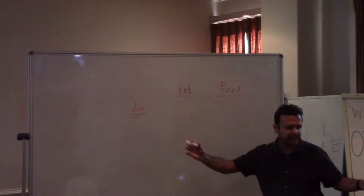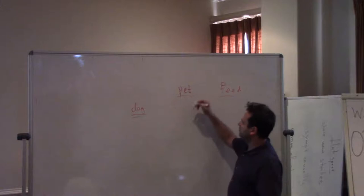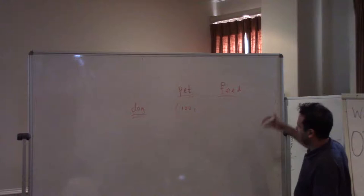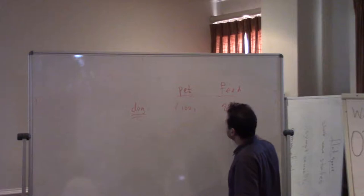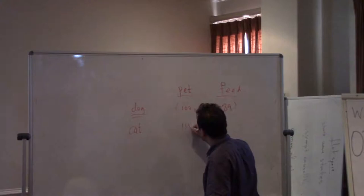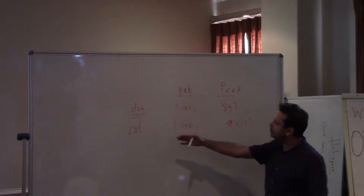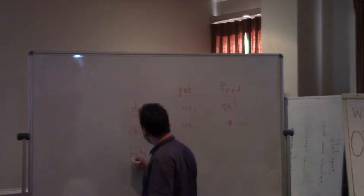Maybe you'd expect 'dog' to occur near 'pet' fairly frequently — let's say a hundred times. Within a window of about five words, you could have 'cat' occurring maybe a hundred and twelve times. Something like that. These words will occur frequently. And then suppose you have a word like 'baby' — it will not occur too frequently with 'pet', but it might occur frequently with 'feed'.